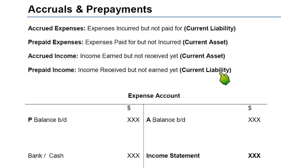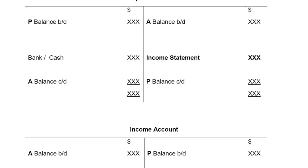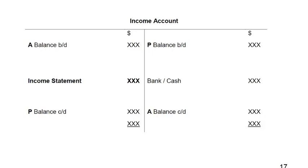It is a current liability for you because you have an obligation for the next 12 months to provide the apartment in the condition specified in the contract. If for whatever reason you fail and do not want to continue, the tenant will ask for the remaining rent paid in advance back. This is an obligation — the rent received in advance. For income, we make a similar but opposite account, known as the income account.